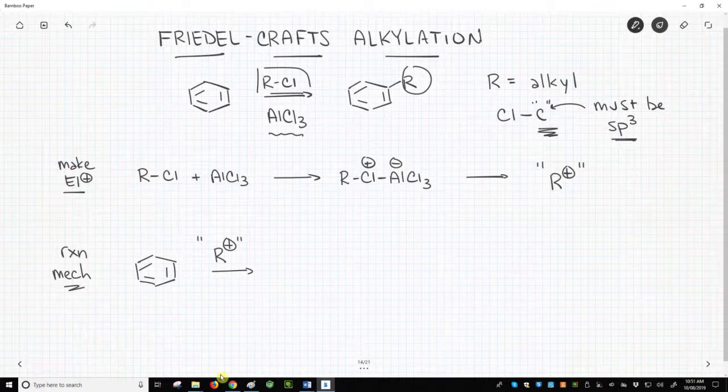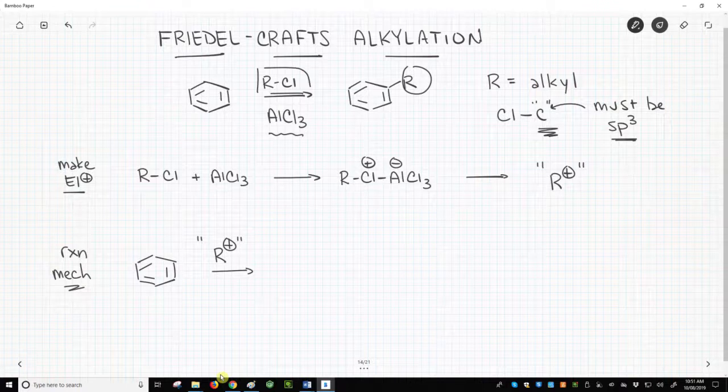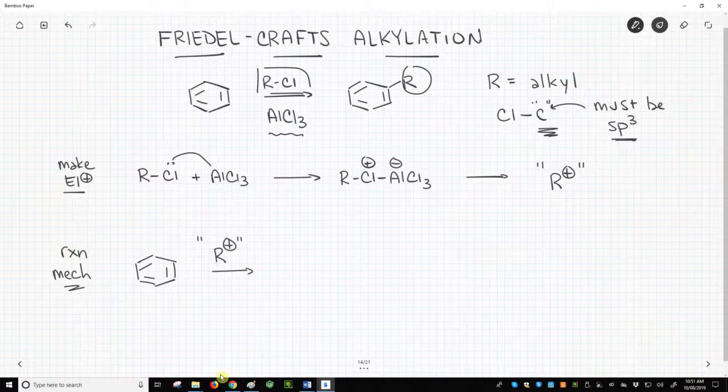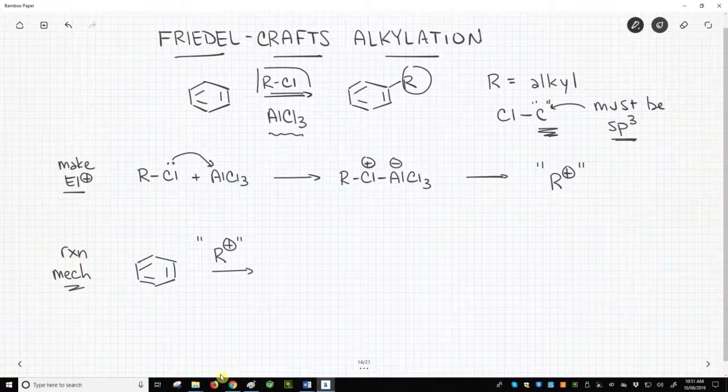How do we get an electrophile? We know that alkyl halides are already weak electrophiles for SN2 reactions, but we need a strong electrophile. The reaction begins with AlCl3 binding a lone pair on the chlorine atom. This step forms a complex shown in the middle of the screen.